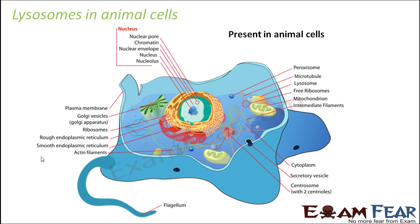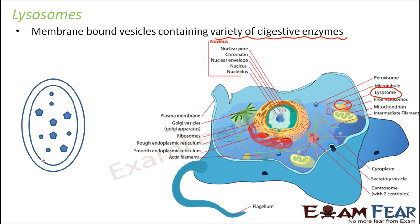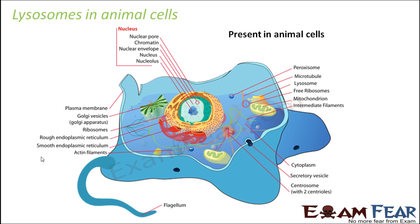Talking about their shape, they can be spherical or irregular — no specific shape as such. They are found in animal cells and are single membrane-bound, so it is not a double membrane but just one membrane which bounds the lysosome. They also act as storage vesicles for digestive enzymes, helping to store them so they can be utilized as and when needed.